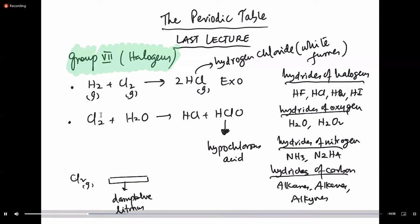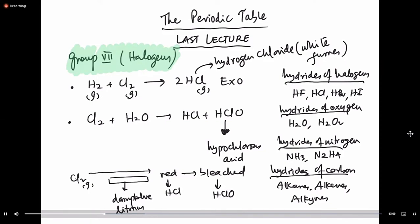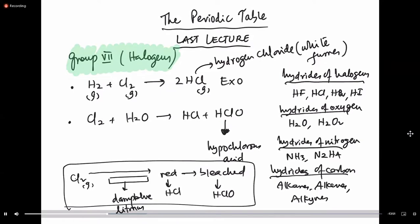I'll be teaching you the test for Cl2 gas soon. Cl2 gas is a bleaching agent. When Cl2 gas is passed over damp blue litmus paper, it turns red first — that's due to HCl — and then it's bleached — that's due to HClO. But if you pass chlorine gas over damp red litmus paper, it's straight away bleached.